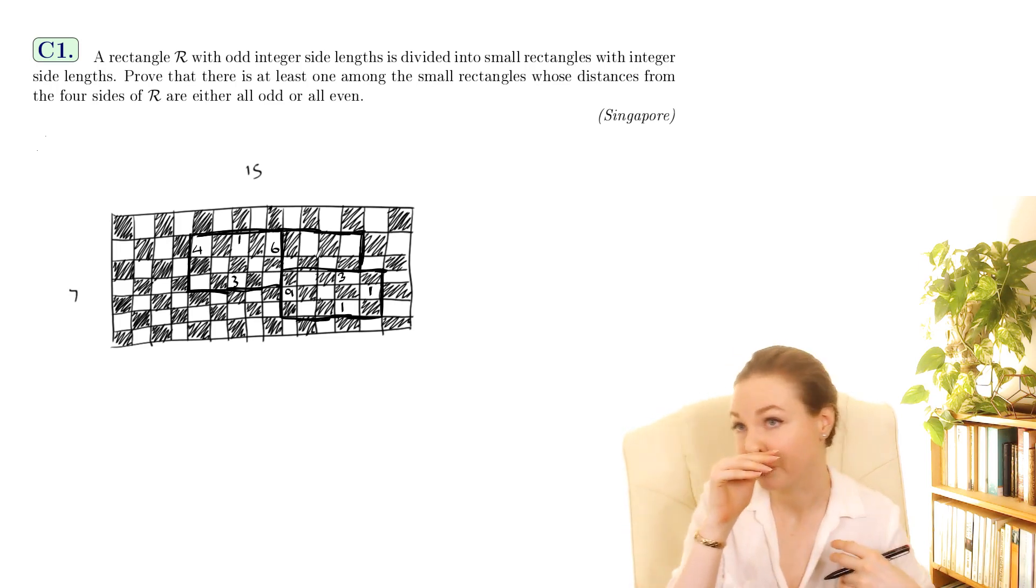So you can kind of see the outline of proof here that there must be at least one rectangle with four black corners, because that's the only way that you're going to get more black squares than white squares in total. And a rectangle with four black corners is going to satisfy this condition. So that's basically the proof, that's the idea of the proof.